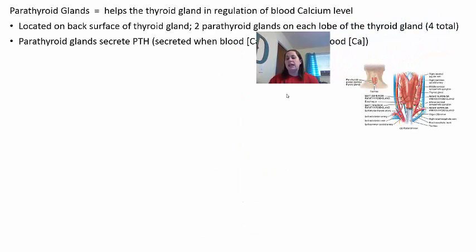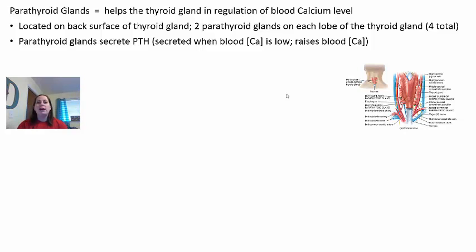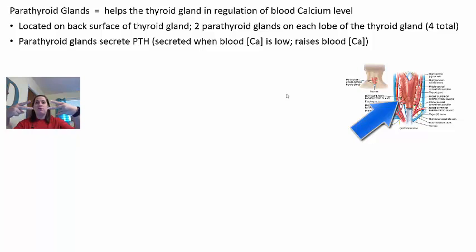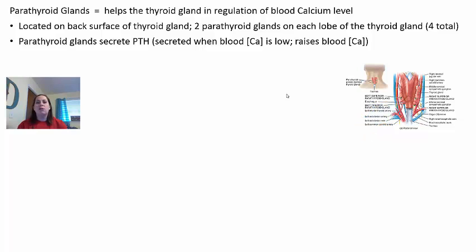The parathyroid glands help regulate blood calcium levels on the other side. The thyroid released calcitonin when calcium was high; the parathyroid glands handle it when levels are too low. They are located on the back surface of the thyroid, with two parathyroid glands on each side (two on the right, two on the left) — very small and greenish in color. They release parathyroid hormone (PTH) when blood calcium levels are too low.